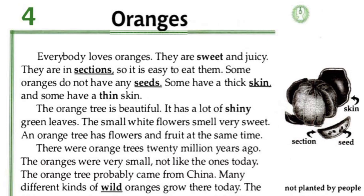There were orange trees 20 million years ago. The oranges were very small, not like the ones today. The orange tree probably came from China. Many different kinds of wild oranges grow there today.